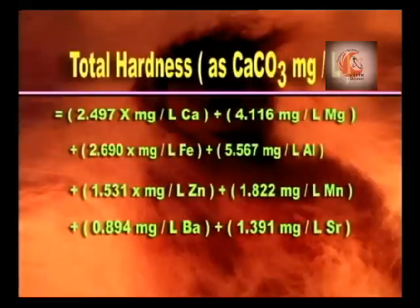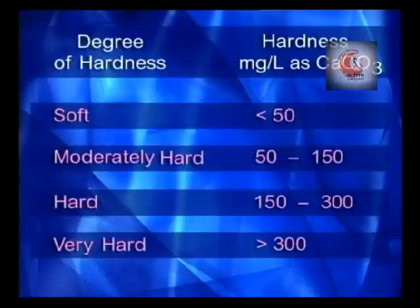Total hardness can also be determined from the concentration of different metallic cations. The cations most often taken into account are calcium, magnesium, iron, aluminium, zinc, barium, strontium, and manganese. Depending on the hardness value, water may be described as soft, moderately hard, hard, or very hard.